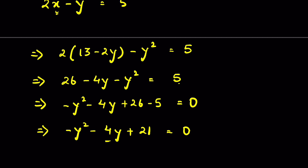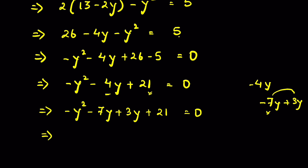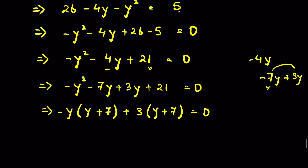We need to break down 4y such that the product of the numbers gives us 21. So minus 4y can be written as minus 7y plus 3y. The product of 7 and 3 gives 21. So: minus y squared minus 7y plus 3y plus 21 equals 0. Taking common factors: minus y times (y plus 7) plus 3 times (y plus 7) equals 0. So (y plus 7)(minus y plus 3) equals 0.